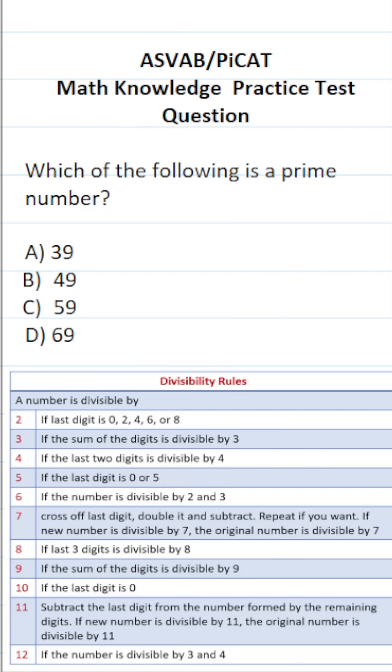This math knowledge practice test question for the ASVAB and PICAT says, which of the following is a prime number? A number is considered prime if it's only divisible by one and itself. For example, five is a prime number because it's only divisible by one and five.